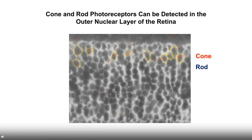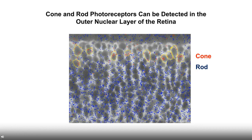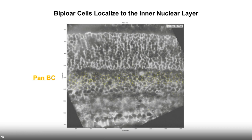Looking more closely at marker gene expression: in the outer nuclear layer, cells highlighted by yellow lines are cone cells because many cone-specific probes are highly expressed there. The probes against rod markers show all the remaining cells are rod cells. The cone cells are located at the top layer of the retina, which is exactly consistent with previous results.